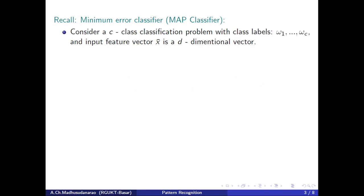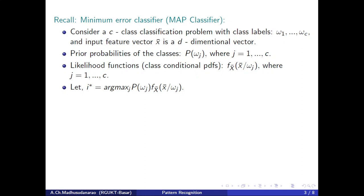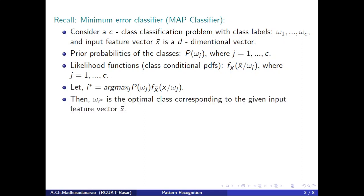Let's recall the Minimum Error classifier, also named as MAP classifier or Bayes classifier. We consider C classes with labels omega 1 to omega C, and the input feature vector is a d-cross-1 dimensional vector. Prior probabilities of the classes are P of omega j, for j equals 1 to C, and the likelihood functions are represented by f of x-bar given omega j. We set i-star equals argmax of P(omega j) times f(x-bar | omega j), and omega i-star is the optimal class for the given input feature vector x-bar. This is the MAP classifier — Maximum A Posteriori Probability classifier.